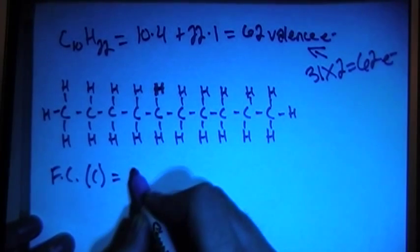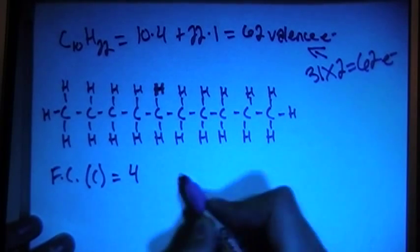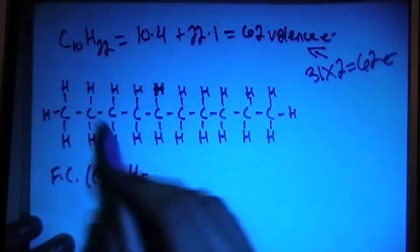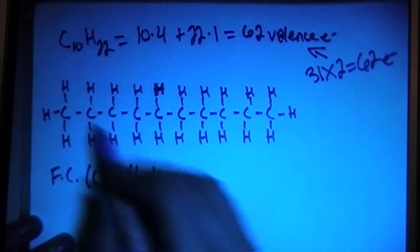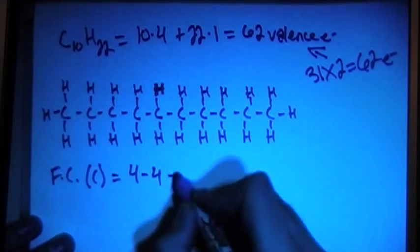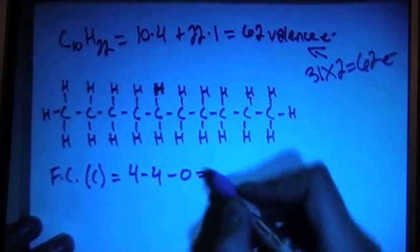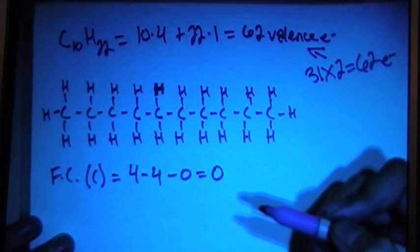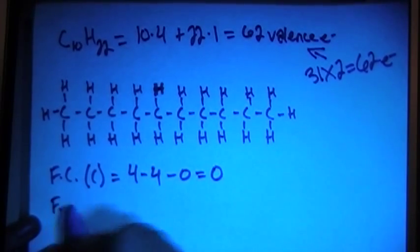So formal charge is valence brought in, which is 4 for a carbon, minus 4 bonds on each carbon, 1, 2, 3, 4, minus 0 non-bonding for each carbon. It's going to give us an overall formal charge of 0 for each carbon atom.